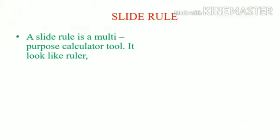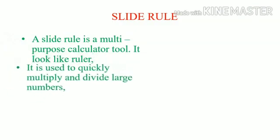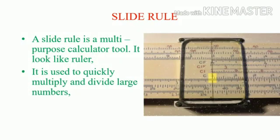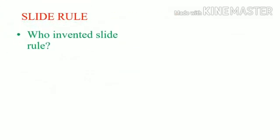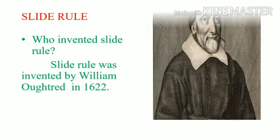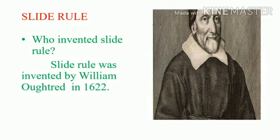Slide Rule. A slide rule is a multipurpose calculator tool. It looks like a ruler and is used to quickly multiply and divide large numbers. The slide rule was invented by William Oughtred in 1622.